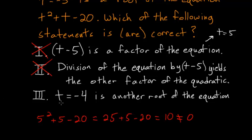And the last one, t is equal to minus 4, is another root of the equation. And to check that, we can just plug in minus 4 into our equation. So minus 4 squared plus negative 4, or minus 4, minus 20.